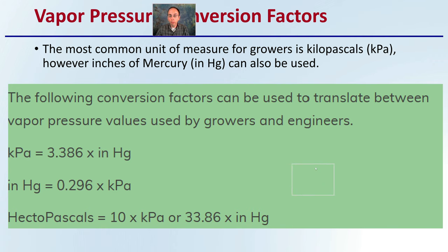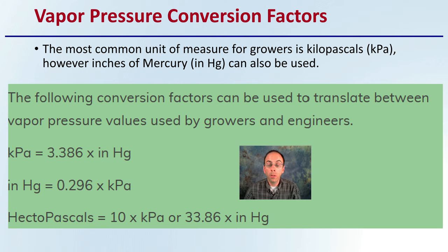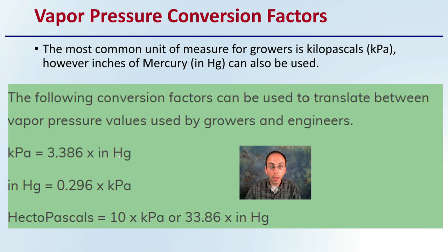Looking at vapor pressure conversion factors: because different meters read in different units, it's important to be able to compare two different sources. The most common unit of measure is kilopascals, or KPA. However, inches of mercury, or inHg, is also used. To get KPA from inches of mercury, multiply your inHg reading by 3.386. If you have KPA and want to get inches of mercury, multiply your KPA reading by 0.296. If you're looking at hectopascals, the conversion is shown at the bottom.